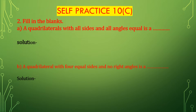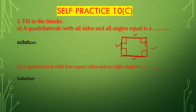First, bit A: a quadrilateral with all sides and all angles equal is a dash. A quadrilateral having all four sides equal and all angles equal — this is a square. A quadrilateral with all sides equal and all angles equal is a square. So the answer is square.